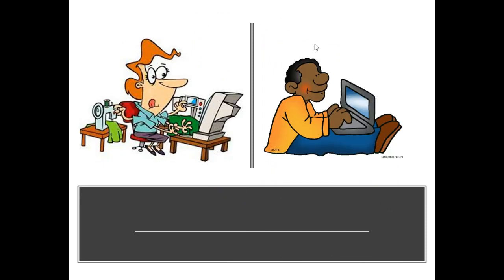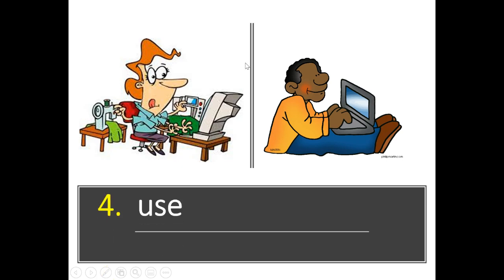Next group of pictures. What do you notice or see, and how are they both the same or similar? I notice that this lady looks like she's working on many different things, and this boy or man is working on his computer, so they're both working. The word is use — they're using the computer or they're using the sewing machine.